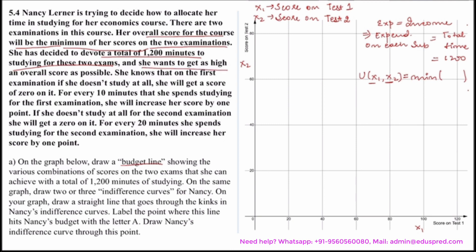She wants to get as high a score as possible. She knows that on the first examination, if she doesn't study at all, she will get a score of zero. For every 10 minutes she spends studying for the first examination, she will increase her score by one point. You might be thinking how to incorporate this 10 minutes — should I take it as 10x1 or x1 divided by 10, since x1 is the score on the test? But that is the wrong way. The utility is simply minimum of x1 comma x2. Her utility function is minimum of x1, x2.